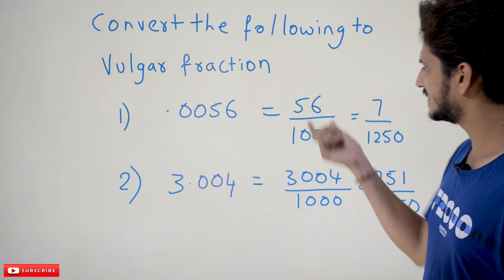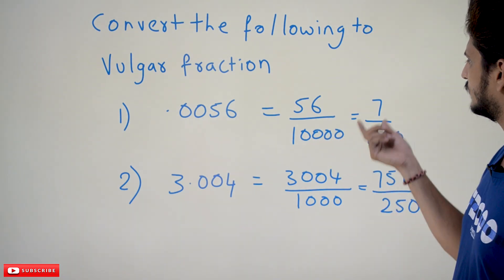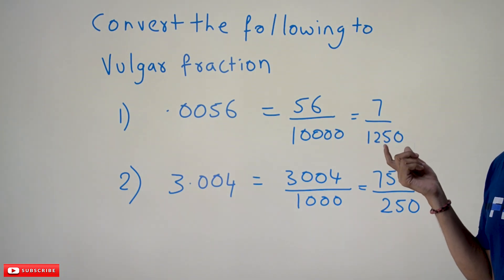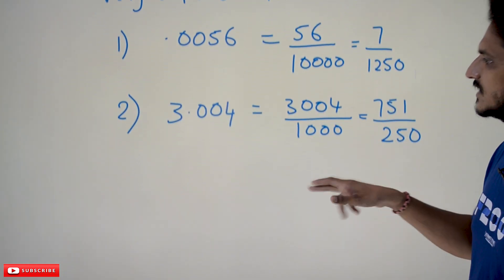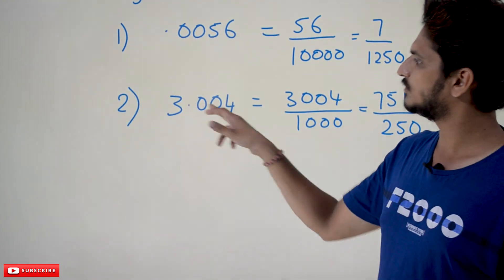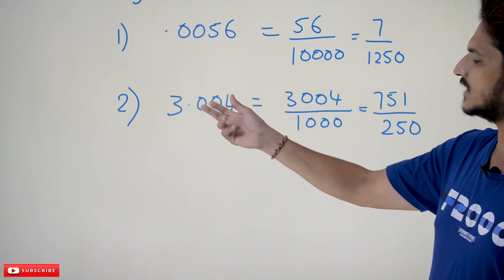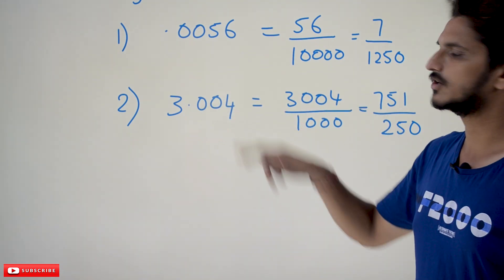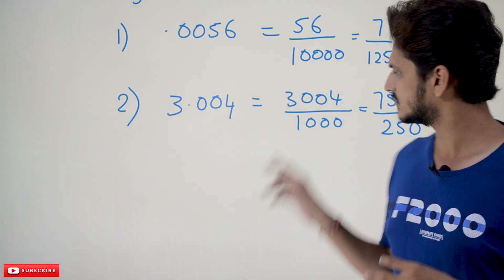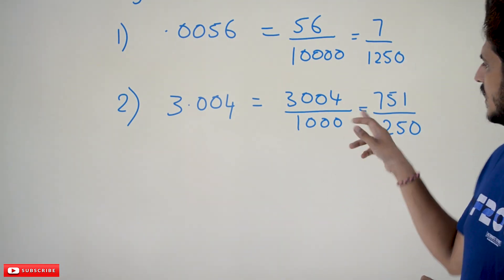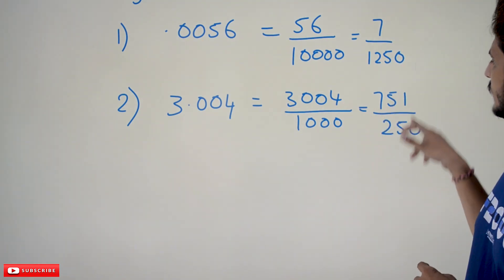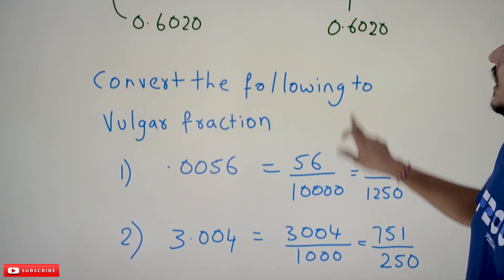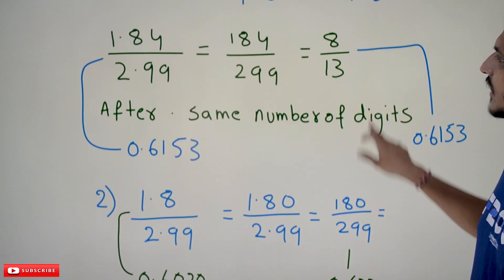Simplifying 56/10,000 gives 7/1250. The next example: 3.004. After the dot there are three digits, so 3004 divided by 1000. Simplifying gives 751/250. This is how we convert decimal fractions to vulgar fractions.